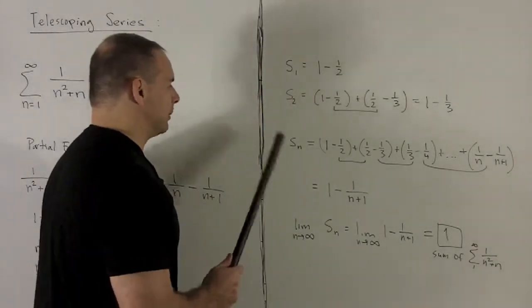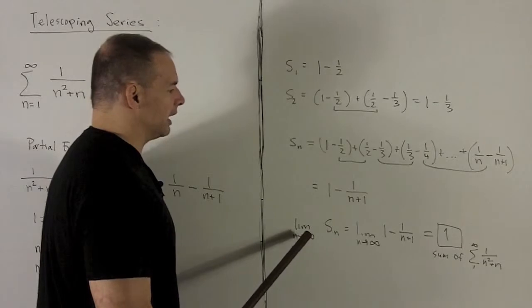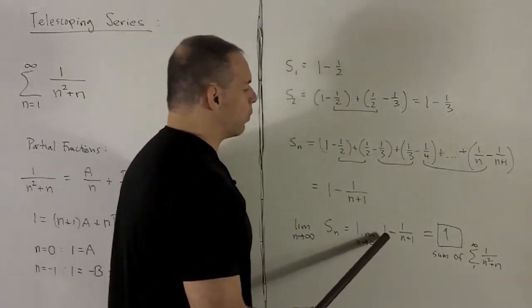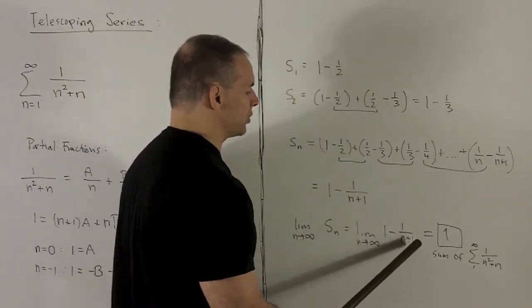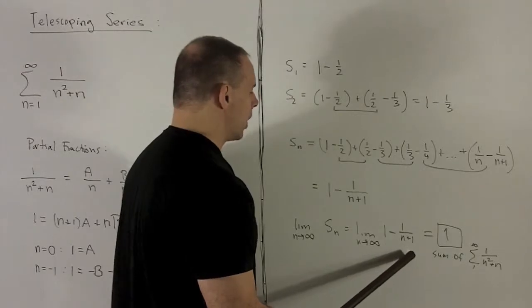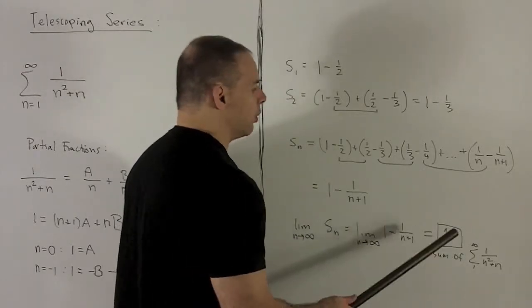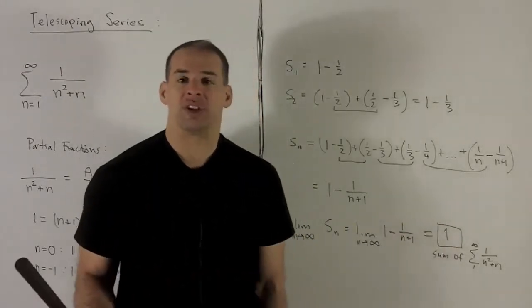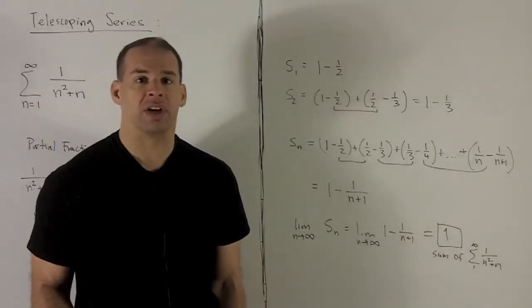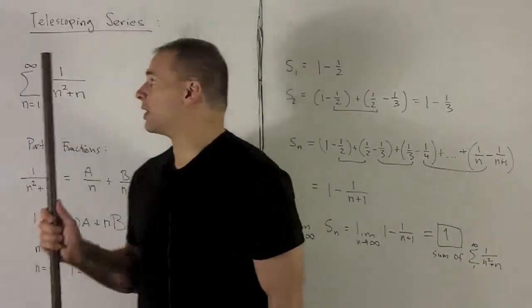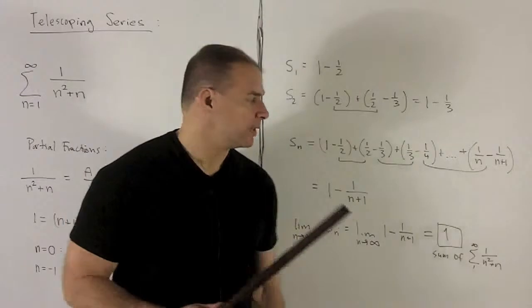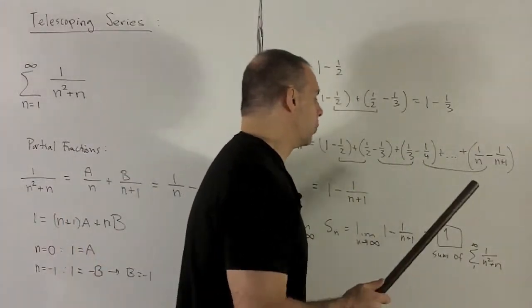Now, we take the limit of our partial sum as n goes to infinity. What happens here is we keep the 1, and then 1 over n plus 1 is going to get driven down to 0. So I wind up with a limit of 1. By definition, that's what we call the sum of our series. So here, for this telescoping series, the sum of our series is going to be equal to 1.